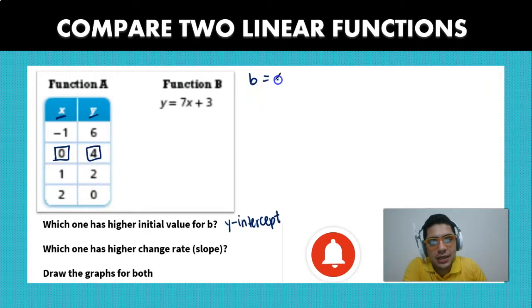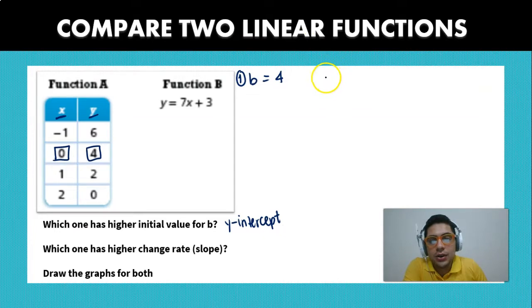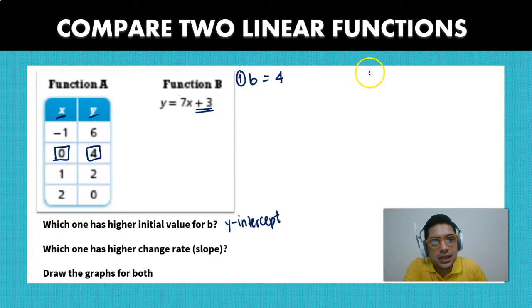So b is equal to 4 in the first one. And on the second one in function B it was given to us in the function itself. So we can see that b is equal to 3 in function B.